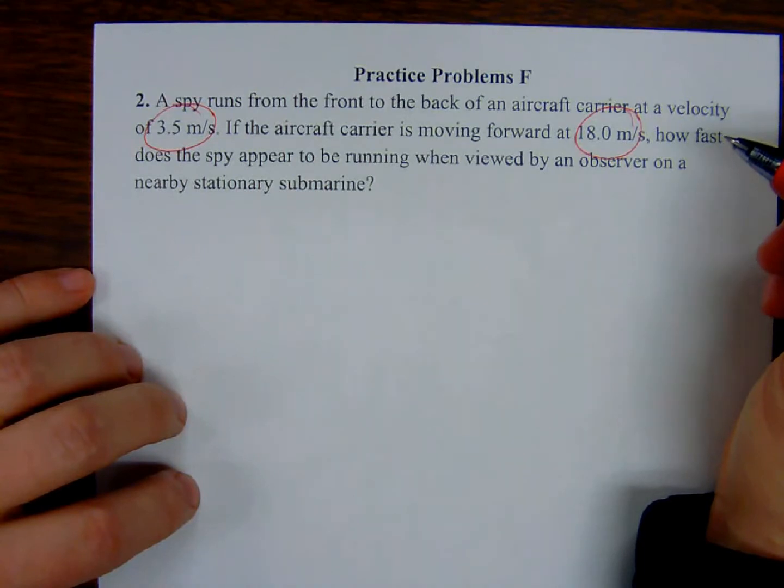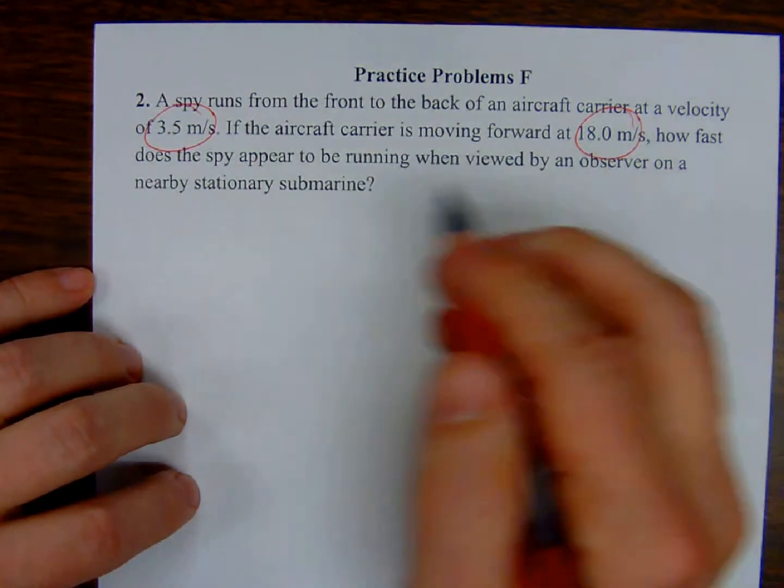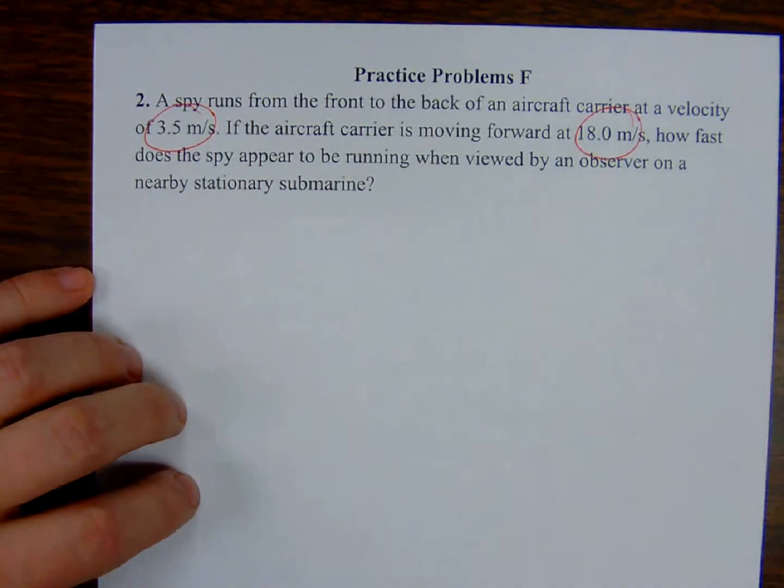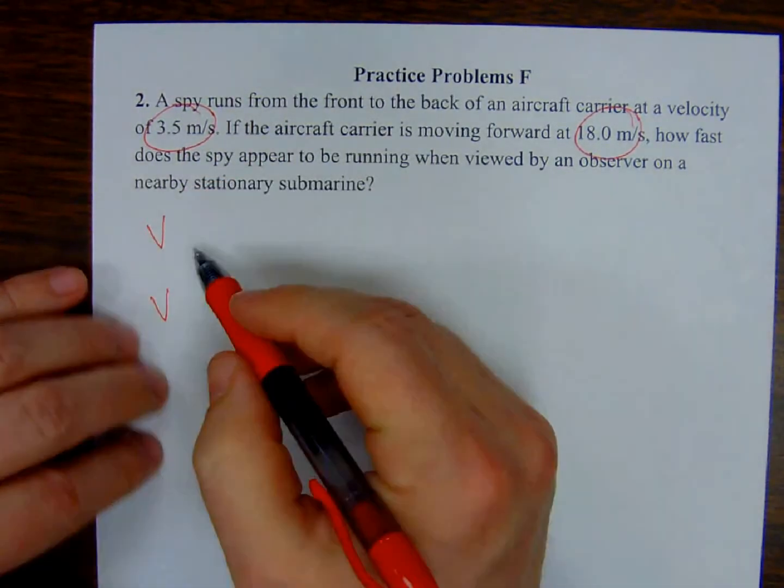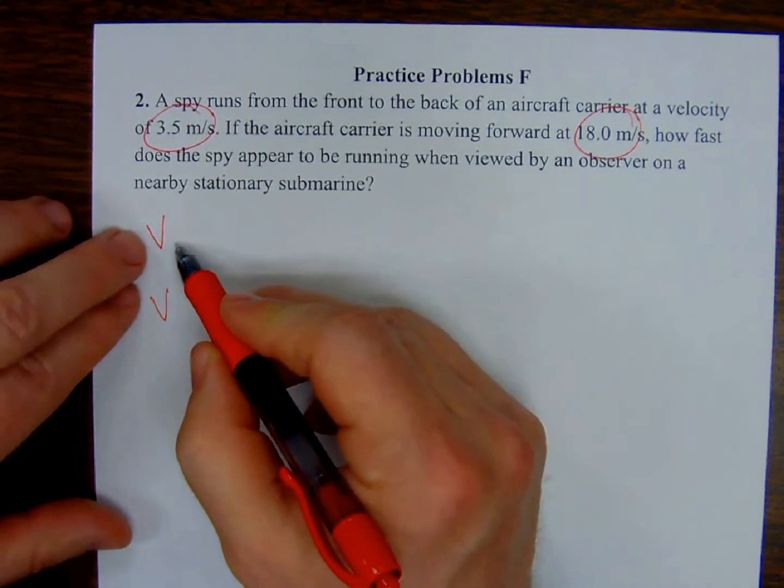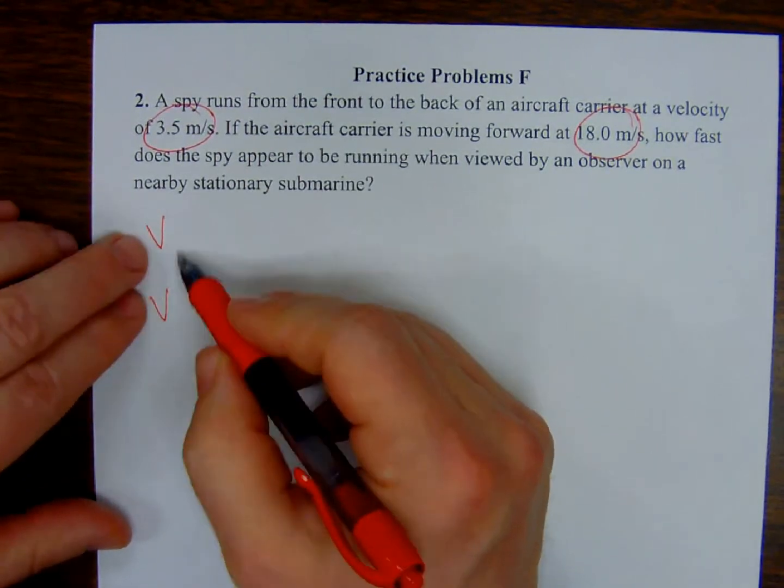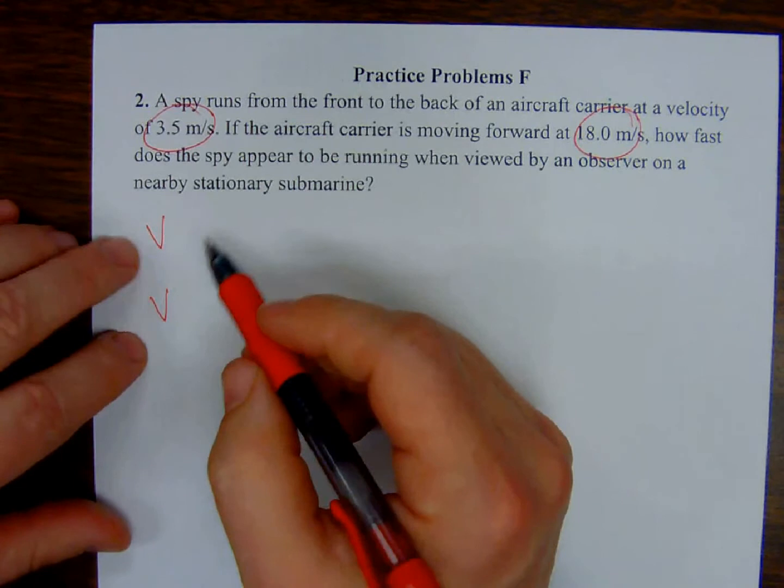So again, relative motion problems. We're going to have a couple of velocities. What students get confused about is what are these little subscripts going to be? Well, the first one that I'm given is the spy.